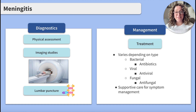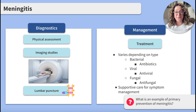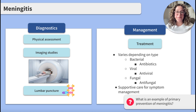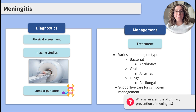As a bonus question — can you think of an example of primary prevention of meningitis? Vaccinations! Receiving the meningococcal, pneumococcal, and Hib vaccines can all aid in preventing common causes of bacterial meningitis.